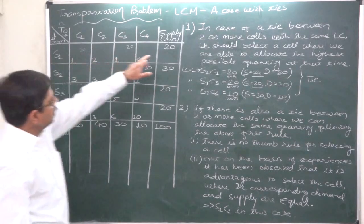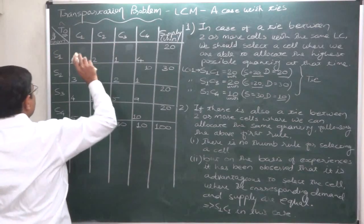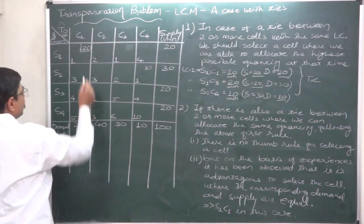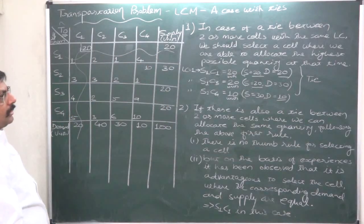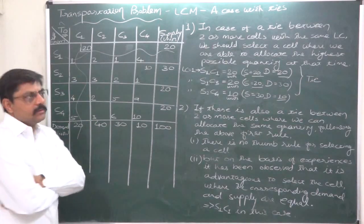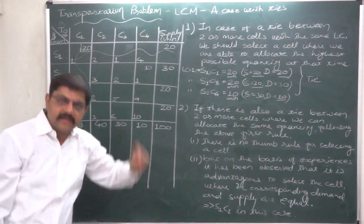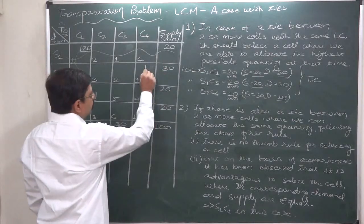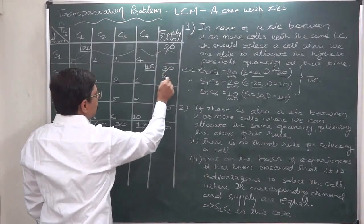Since demand and supply are both 100% satisfied at S1C1, we select S1C1 and make a 20-unit allocation. Both demand and supply are exhausted, so we cancel both the corresponding row and column. From the remaining cells, the least cost is again one rupee — and now there is only one cell with that cost, so there is no tie. Demand is 10, supply is 30; whichever is lower is 10, so we allocate 10 units. Demand is satisfied, but supply still has 20 units remaining.